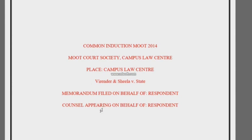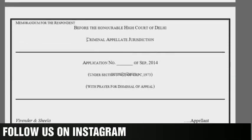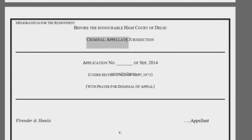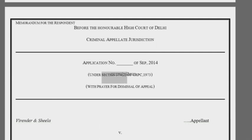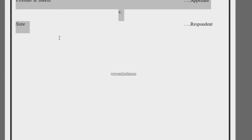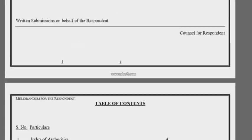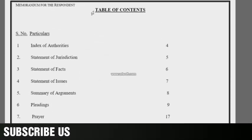The second page of the memo consists of the following details: first, type of jurisdiction; second, the section under which the appeal has to be filed; and third, name of the parties. The third page is for the table of contents, which should be within one page.